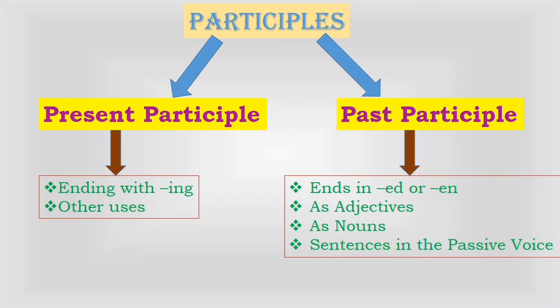Past participles can also be used as nouns. For example, the injured will need some time to recover. Sentences in the passive voice always use the past participle. For example, the vase was broken by Mahesh.